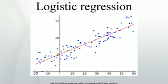The logit of success is then fit to the predictors using linear regression analyses. The predicted value of the logit is converted back into predicted odds via the inverse of the natural logarithm, namely the exponential function. Therefore, although the observed dependent variable in logistic regression is a zero or one variable, the logistic regression estimates the odds, as a continuous variable, that the dependent variable is a success — a case. In some applications the odds are all that is needed. In others, a specific yes or no prediction is needed for whether the dependent variable is or is not a case. This categorical prediction can be based on the computed odds of a success, with predicted odds above some chosen cutoff value being translated into a prediction of a success.